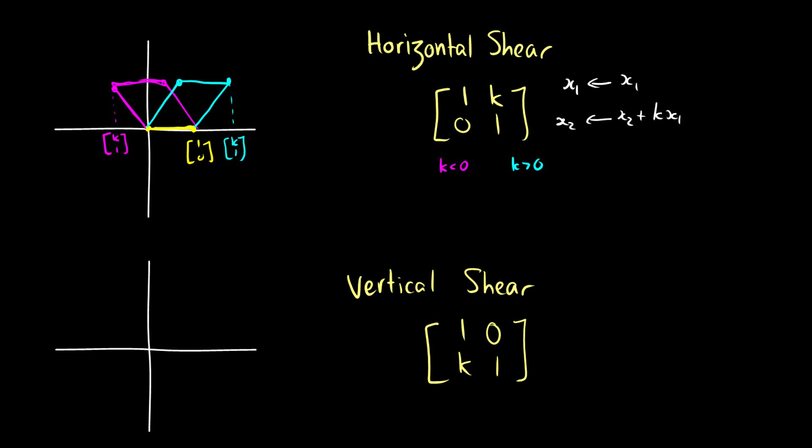If it's greater than 0, it goes to the right. If it's less than 0, it goes to the left. Because what we're saying is, okay, this x2, if k is less than 0, this x2 is becoming x2, and then it's taking some number of negative x1s. So it's going to shift it to the left a little bit. And if it's positive, it's taking some positive number of x1, so it's going to push it to the right.